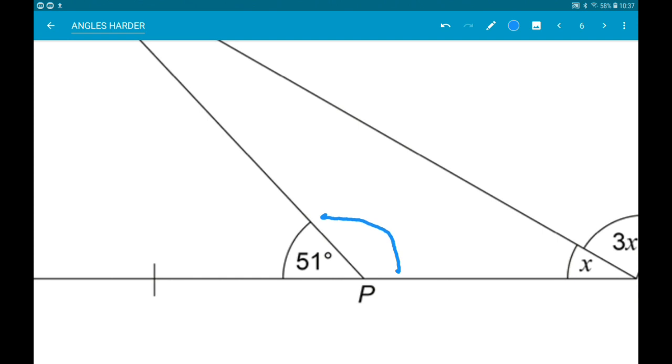Now it might be useful, it might not, but in the real thing, it might gain some marks either way. So 180 minus 51 is 129 degrees. Okay, so not much use at the moment.